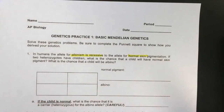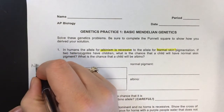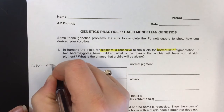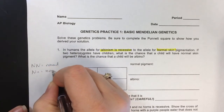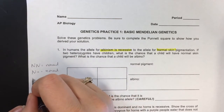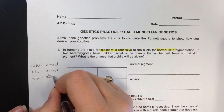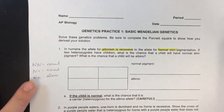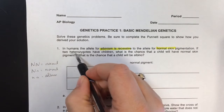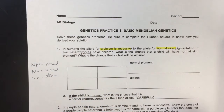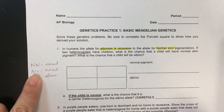I'm going to use the letter N. I'll put a little key on the side: big N, big N would be normal; big N, little n would also be normal — that's my heterozygous. And then homozygous recessive, little n, little n would be albino. So if two heterozygotes have children, that means the parents are big N, little n.